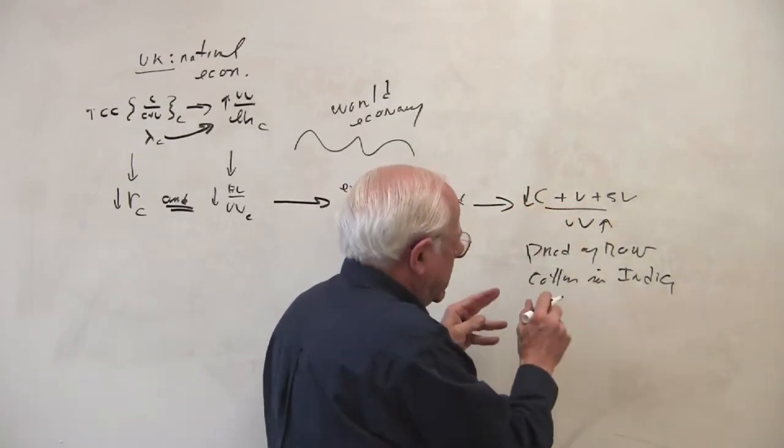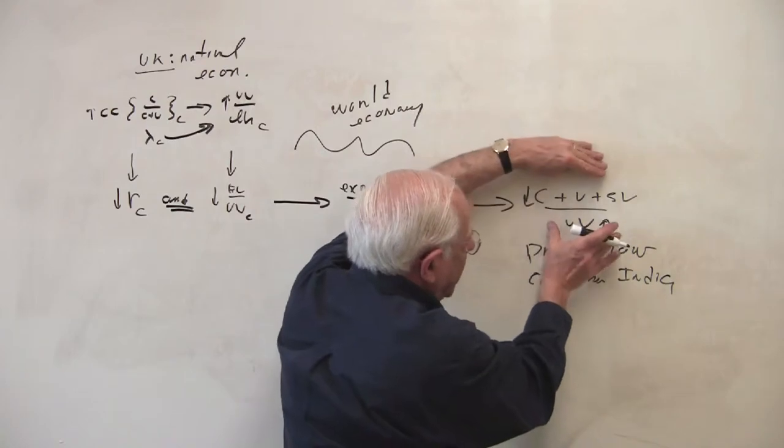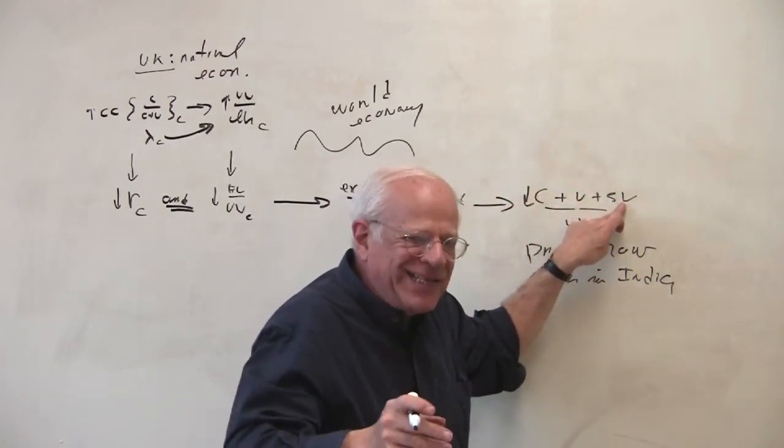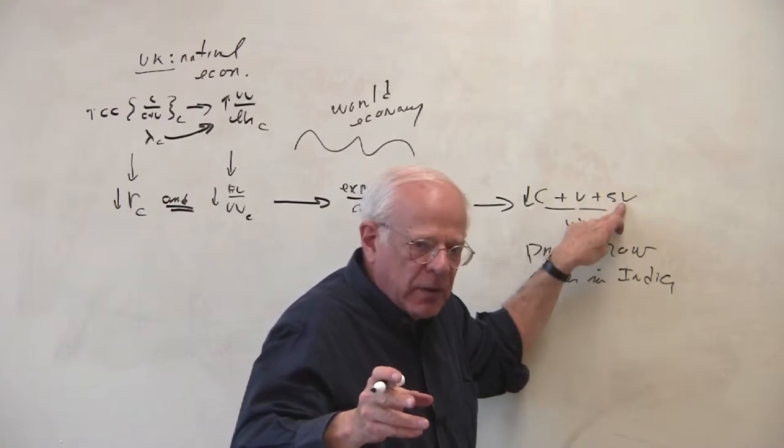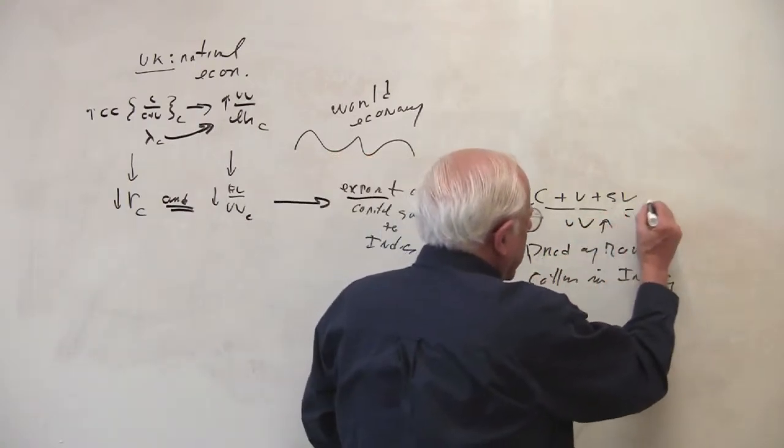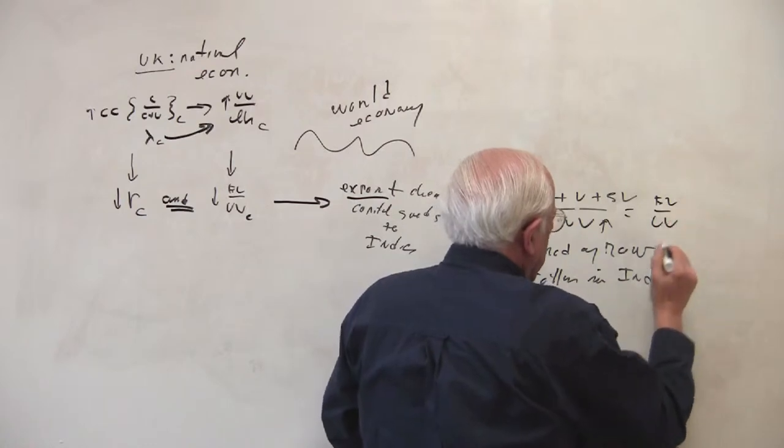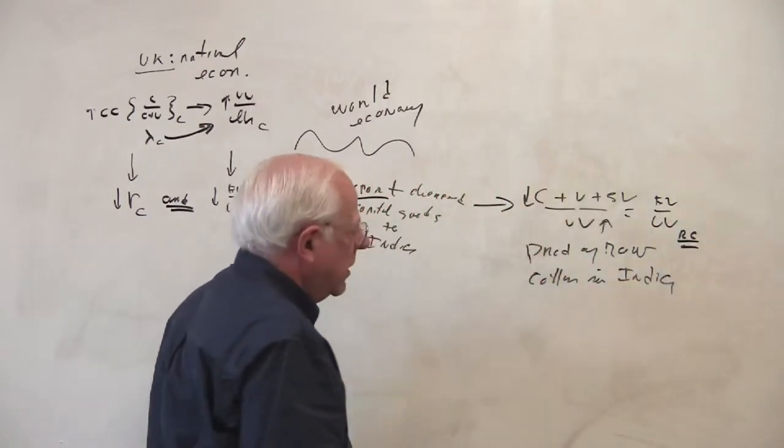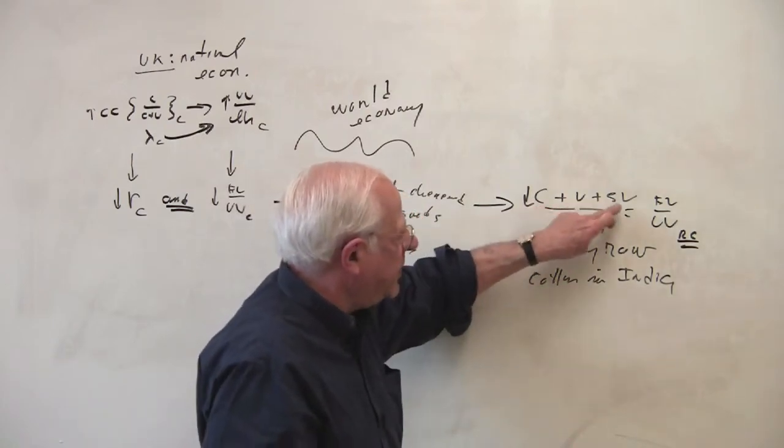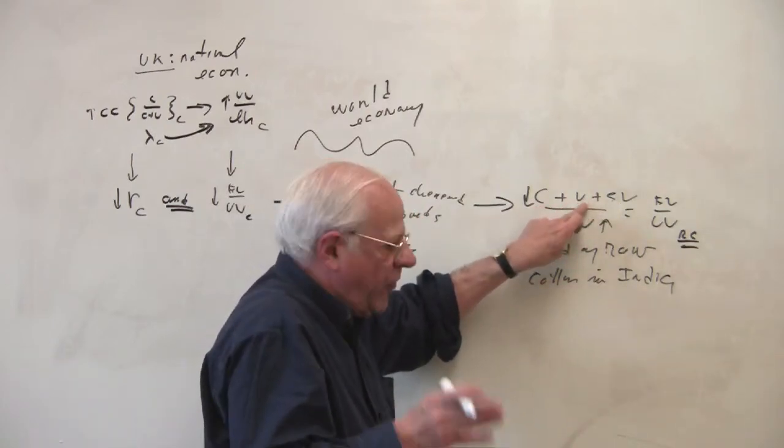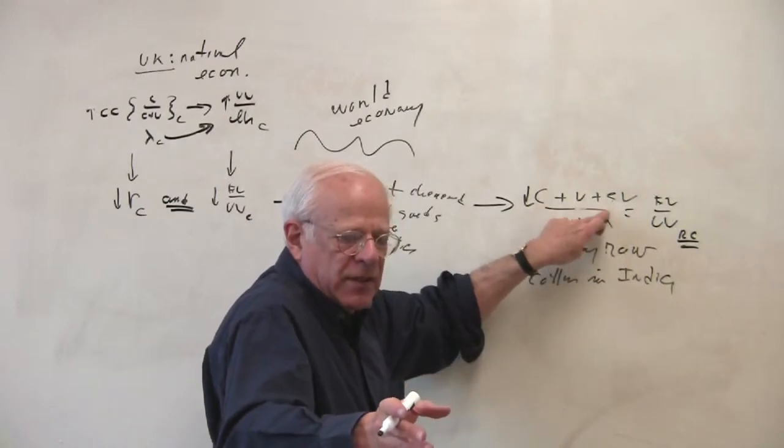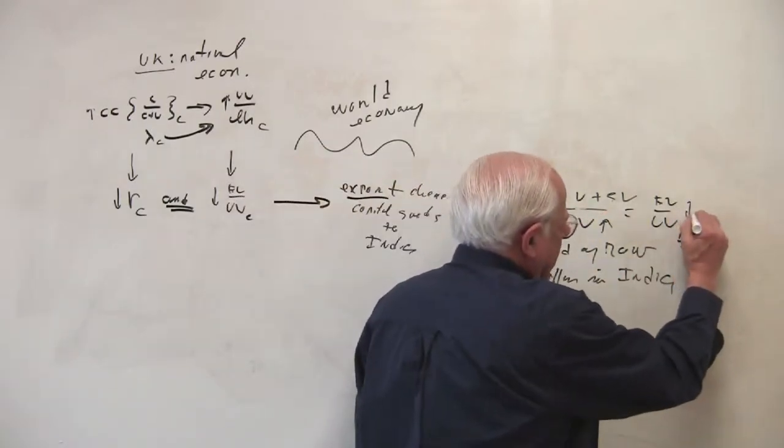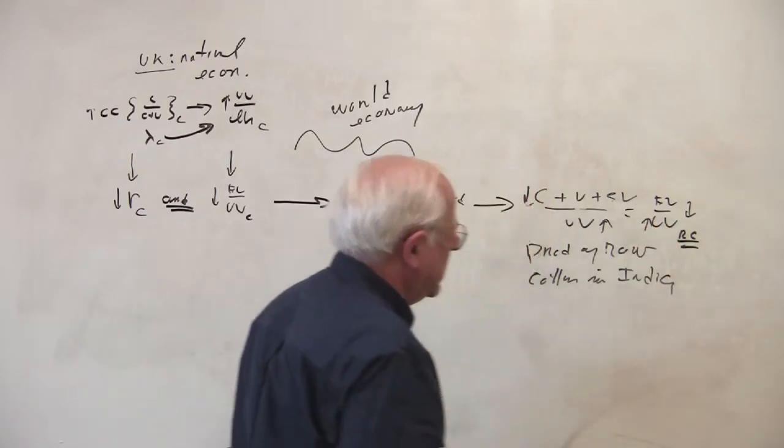If V falls as well, there's no effect on the total ratio because a fall in V is a rise in surplus value. So the price, the total price of the raw cotton, the raw material, does not change if there's a fall in V because that's just like, a fall in V is an increase in the S over V. It's the fall in the C that pushes this down and an increase in the productivity of labor in India.